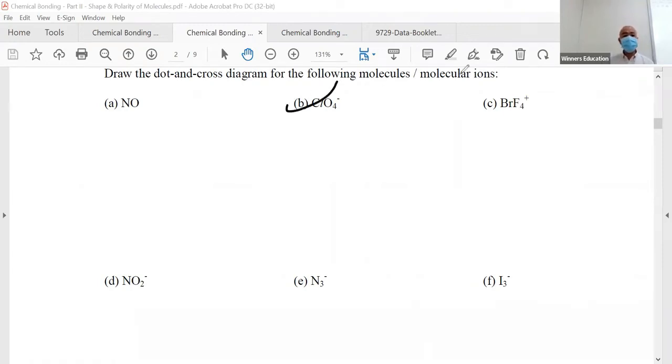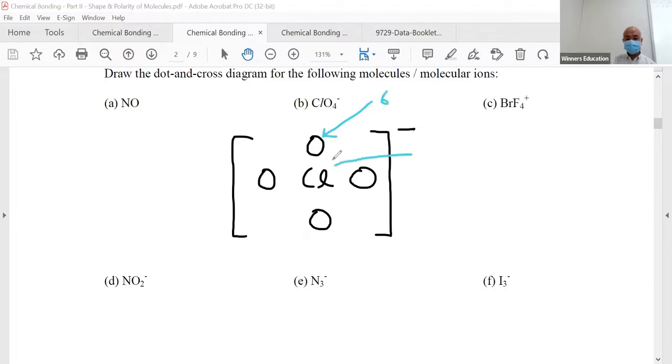Alright, let's do ClO4 minus. Four corners, take them out. For negative ions, be careful when you count atoms. Let's count: six, seven, four times six plus seven makes 24 plus 7 equals 31. But don't forget it's negative, meaning it's an anion, so take one more electron in. That makes 32, an even number.